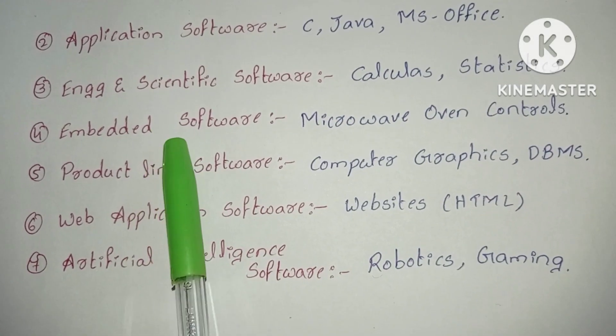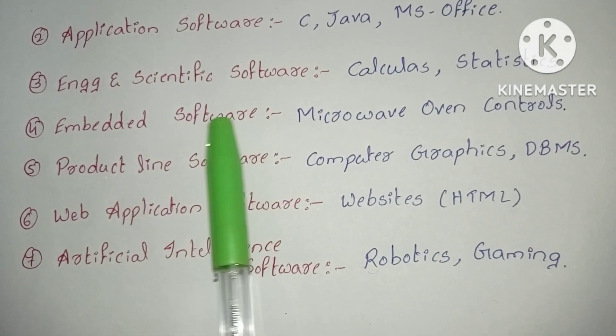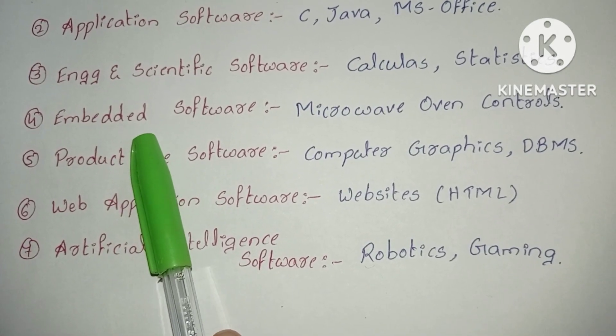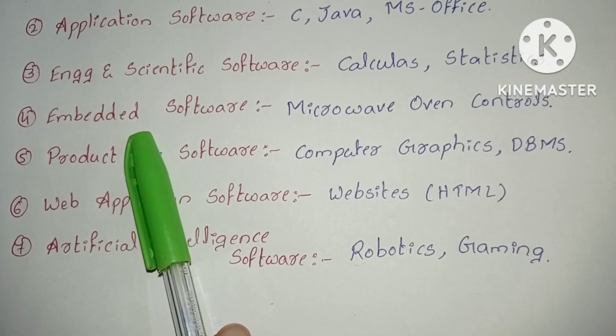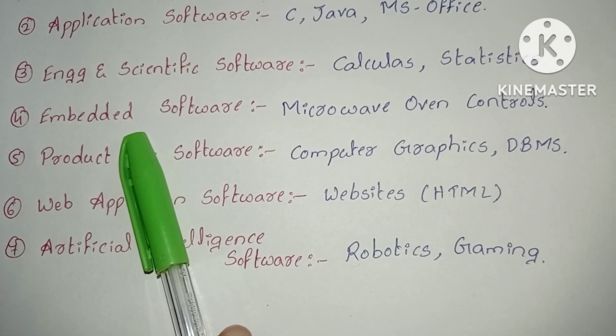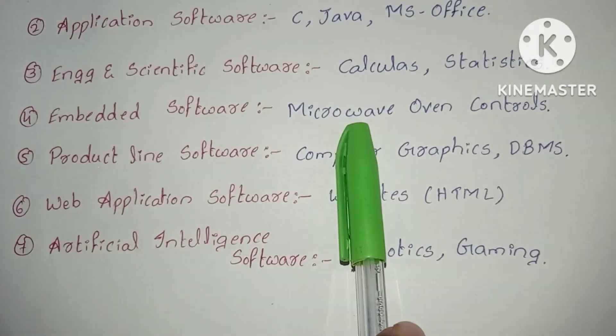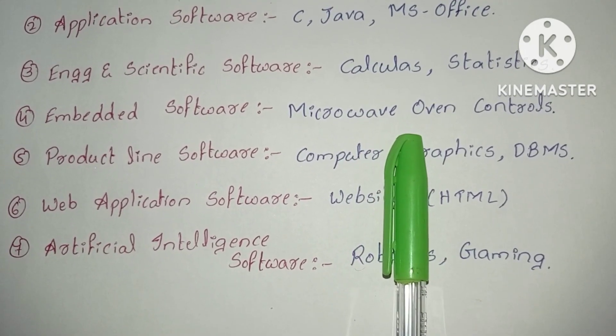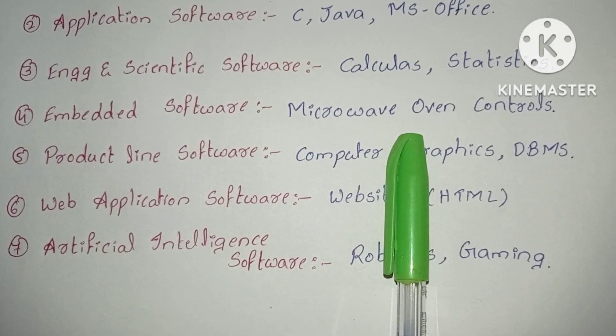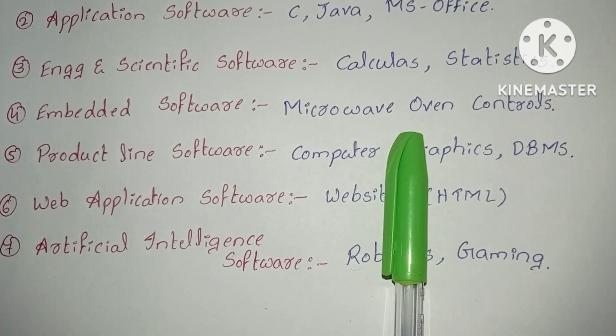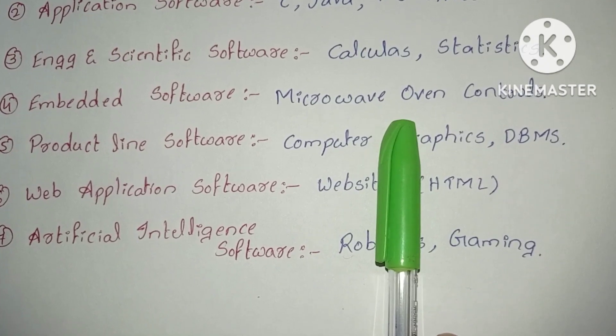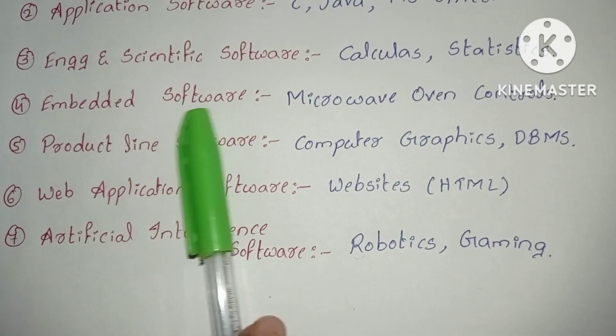Fourth is embedded software. Embedded is nothing but one within another. The general meaning is it lies on the hardware of the system and uses it to control functions like your microwave oven. It is a hardware device, but we can adjust the temperature. Those functions are already inbuilt by the software. Microwave oven is the best example for embedded software.